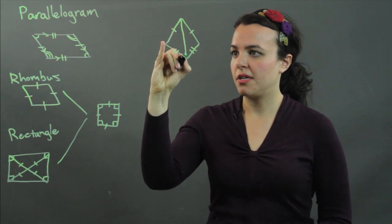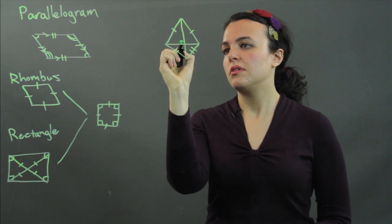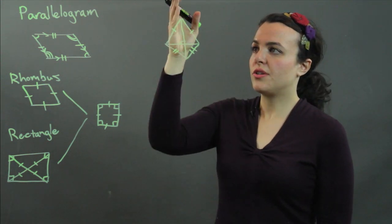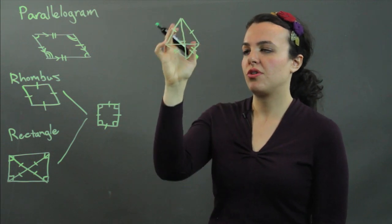And also, the diagonals intersect at a right angle, and this longer diagonal bisects the kite into two congruent smaller triangles.